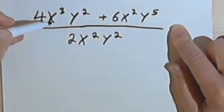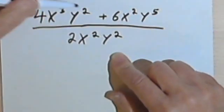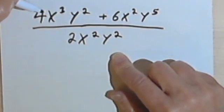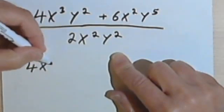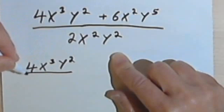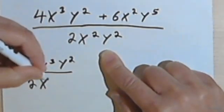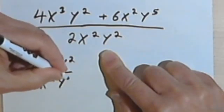All we're going to do is turn this into two fractions. So we're going to take the first term of the numerator, 4x³y², and divide that by the denominator, 2x²y².